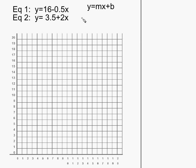We're going to look at two equations of lines here. Equation one is y equals 16 minus 0.5x. Equation two is y equals 3.5 plus 2x. And the standard equation of a line, the most common way people write it, is in the form of y equals mx plus b.